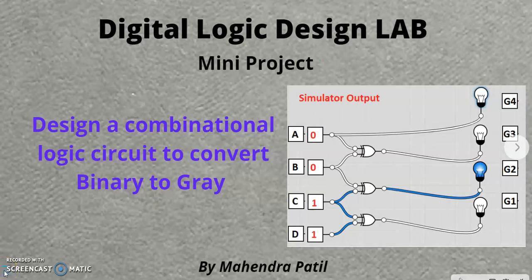Hello friends. In this video we are going to study how to design a combinational logic circuit to convert a binary number to grey code. It can be a small mini project for students where they can pass a 4-bit binary number as input to the combinational logic circuit and obtain a 4-bit grey code as output.